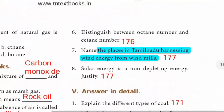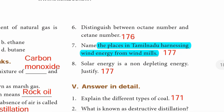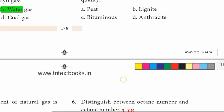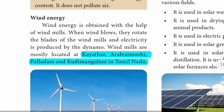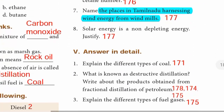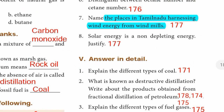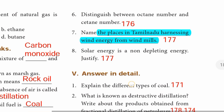Seventh question: Name the places in Tamil Nadu harnessing wind energy from windmills. Page 177. The places are Kaithar, Aralvaimozhi, Palladam, and Kudimangalam in Tamil Nadu. Mention all four places as separate points.